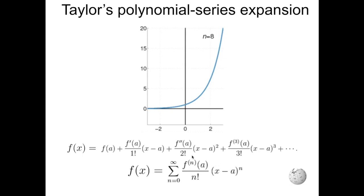Compactly, you can write this as a sum of infinite terms in which you have the nth-order derivative calculated in a, divided by n factorial, times the nth-order polynomial x minus a.